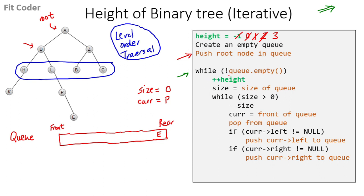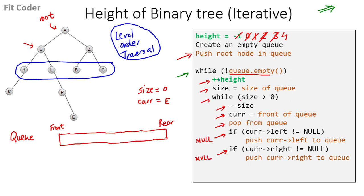We check the outer while loop — queue is not empty, so we enter and increment height — height is now 4. Size of queue is 1. We decrement size to 0, set current to E, and pop E — queue becomes empty. Left of E is null and right of E is also null, so we skip both if conditions. Size is 0, so we exit the inner loop. Back in the outer while loop, the queue is now empty, so this loop also terminates. We return the height variable, which is 4. That is the height of the tree.